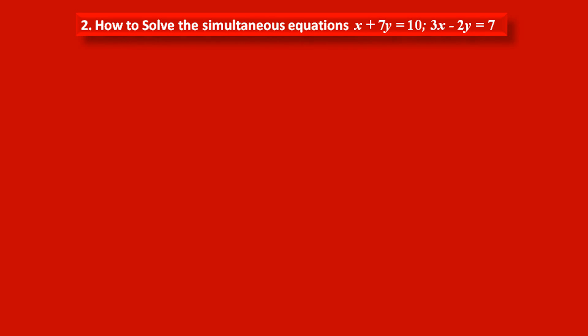Friends, now we have to solve the simultaneous equations x plus 7y equals 10 and 3x minus 2y equals 7. This means we have to find values of two variables x and y.